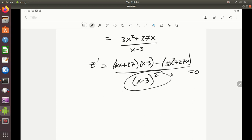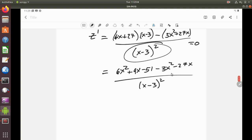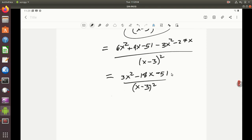So the denominator doesn't matter in setting it equal to 0, but it definitely will matter as far as a second derivative. That starts looking really ugly. But let's just take care of this first. I can multiply this thing out. This is 6x squared plus 27 and a minus 18 is a plus 9x and then minus 51. And that's minus 3x squared minus 27x all over x minus 3 squared.